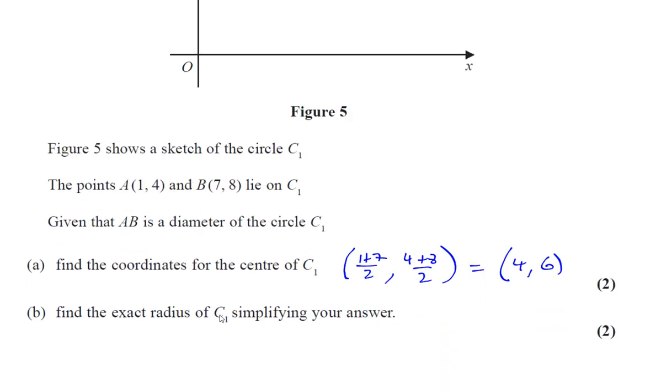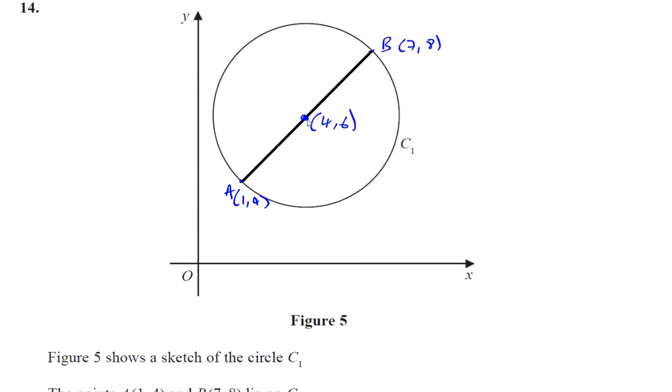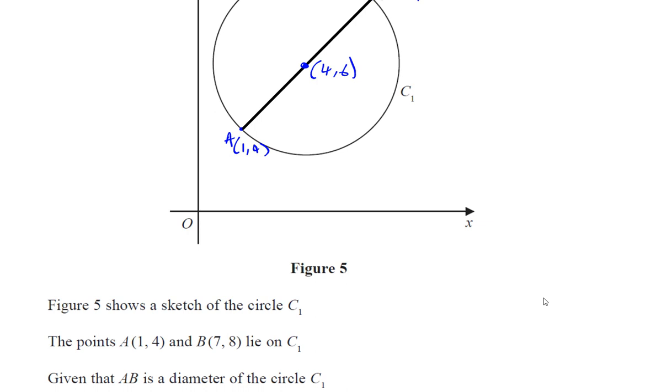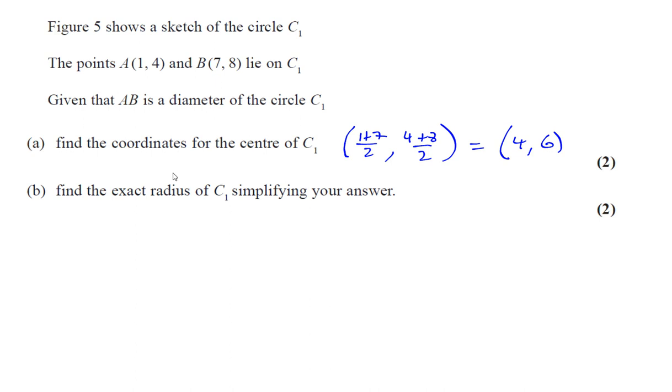Part B asks for the exact radius of C1, simplifying your answer. The radius is going to be the distance between the center and A or center and B. Now, just in case you made a mistake in the first part, what I would suggest you do is find the distance between A and B and divide it by 2. Because supposing you made a mistake with finding the midpoint, then your next answer will also be wrong. But you already have A and B, you already have the diameter. The radius is half the diameter, so I would suggest that would be a better option in this particular case.